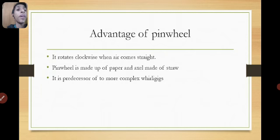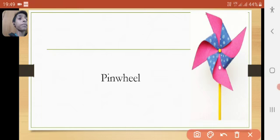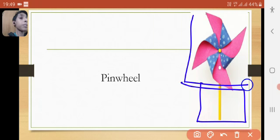Pinwheel is made up of paper and axle is made up of straw. Here, as we all can see that pinwheel, the upper part... I mean lower part is made up of straw. It is a straw and it is made up of paper.